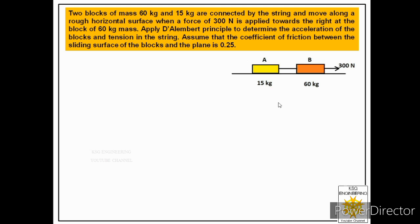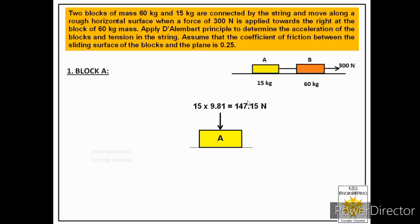To solve this problem, first we have to see how many bodies are in motion. In this problem, two blocks are in motion, so we have to draw their individual free bodies. Let us start with the free body of block A. We represent its weight, which always acts in the downward direction. Its mass is 15 kilograms, so multiplying by 9.81 we get its weight as 147.15 newtons.